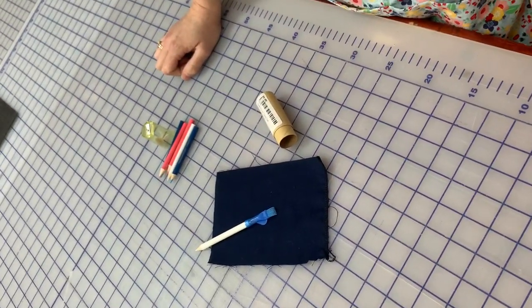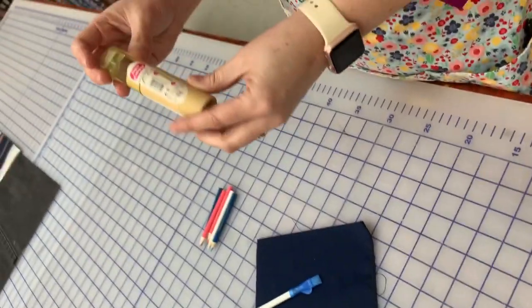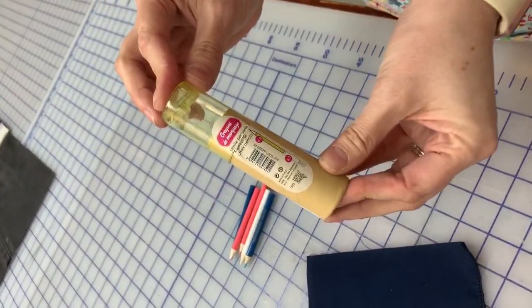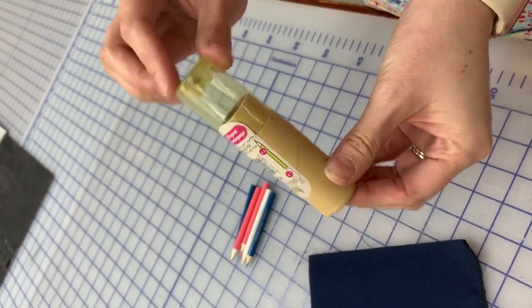Just like that, easy peasy. So today's must have Monday is the travel chalk pencil case with the included pencils and sharpener.